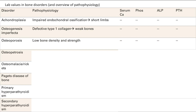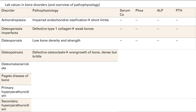Osteopetrosis: defective osteoclasts that aren't working, so you get overgrowth of bone that's super dense but also super brittle with easy fractures. Lab values are pretty much normal, but sometimes you can have slightly decreased calcium, because you need to resorb bone to get calcium into your blood, and in osteopetrosis all that calcium is getting mineralized into bone, so it's low in the serum.